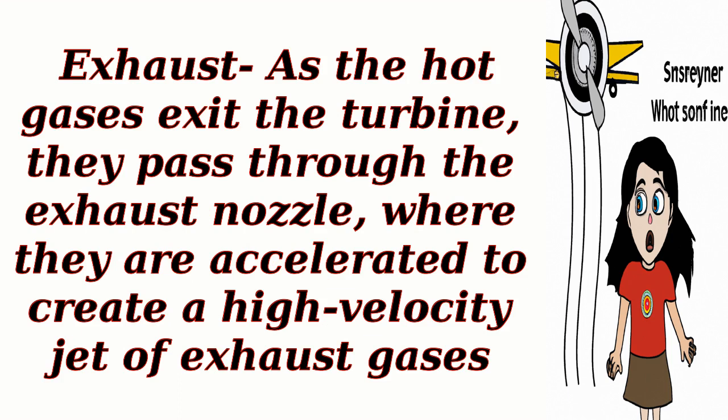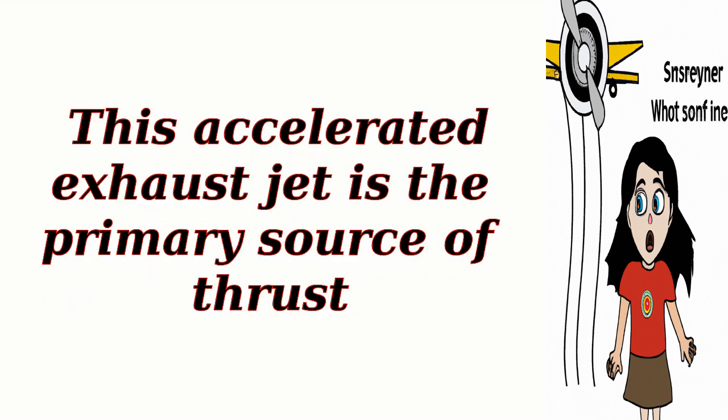Exhaust: As the hot gases exit the turbine, they pass through the exhaust nozzle, where they are accelerated to create a high-velocity jet of exhaust gases. This accelerated exhaust jet is the primary source of thrust.